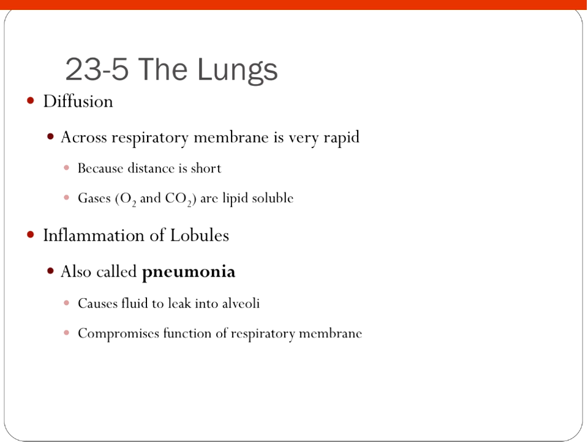Simple means just one layer — we only have one layer of these cells, which allows diffusion to take place much more rapidly and efficiently for a nice exchange of oxygen. If we have an inflammation of the alveoli, we call that pneumonia, and that causes too much fluid to leak into the alveoli. When you have all this excess fluid in the alveoli, we don't have very good exchange of oxygen for carbon dioxide, because gases tend to diffuse into water rather than go in and out of the body — that's why it compromises the function of the respiratory membrane.